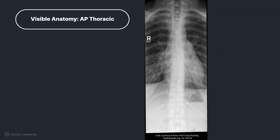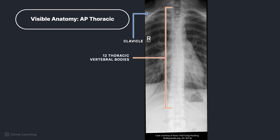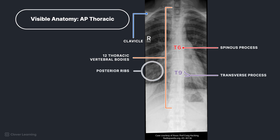Can you identify the anatomy? Working from superior to inferior, we can see the clavicles, first ribs, which articulate with T1 shown here, the remaining thoracic vertebral bodies of T2 through T12, spinous processes — this is T6 — posterior ribs, and transverse processes. This is T9.